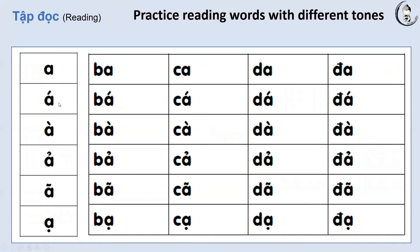Letter A with dấu sắc. Pay attention that this has an up tone. You start high and you go higher. Á. Bá. Cá. Giá. Đá.